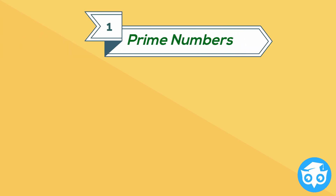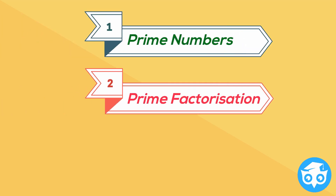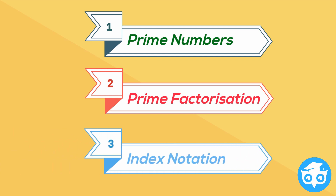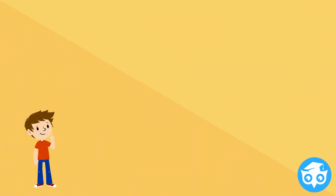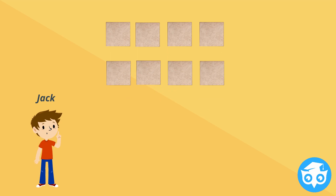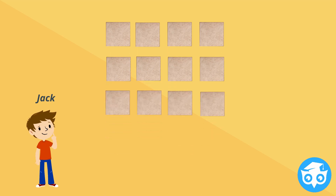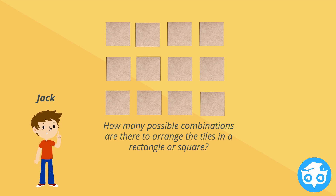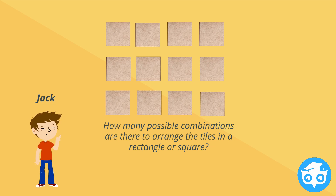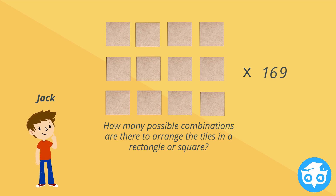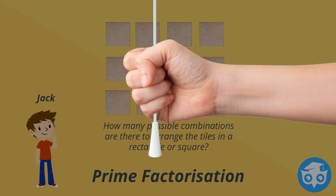Today, we are going to look at prime numbers, prime factorization, and index notation. This is Jack. His parents gave him 12 tiles to arrange a design. So how many possible combinations are there to arrange the tiles in a rectangle or a square? This might seem simple, but what if there are 16 times or even 169 times more? This is where prime factorization comes in.